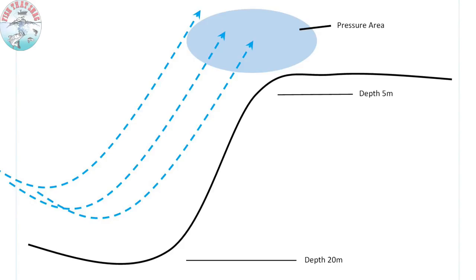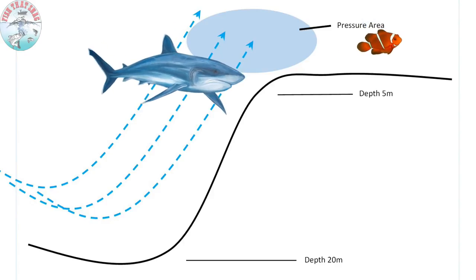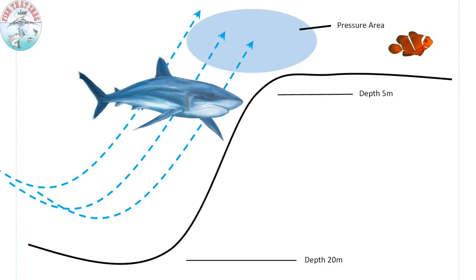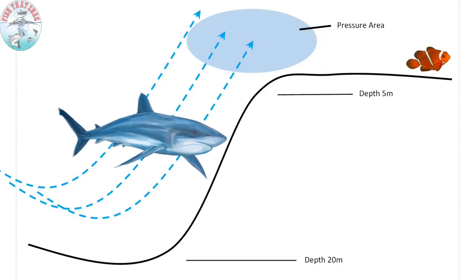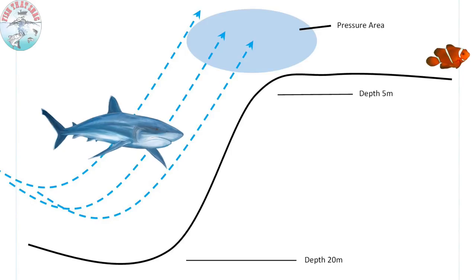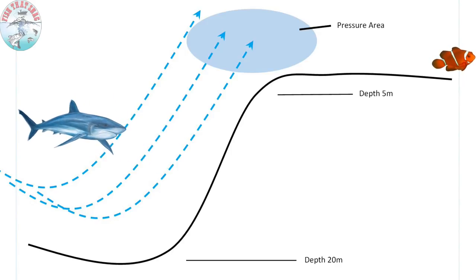These are prime spots to fish because as the water is being pushed up, so too does a lot of bait and particles in the water. Predators like to hang out around these areas as they make good ambush points. The bait that gets pushed up on that ledge doesn't have much room to escape. They're competing against the current flow and the fast predators like to just go in there and smash them.